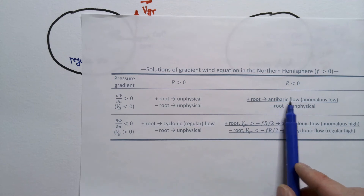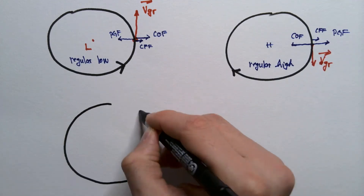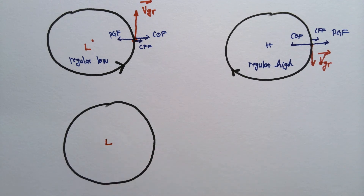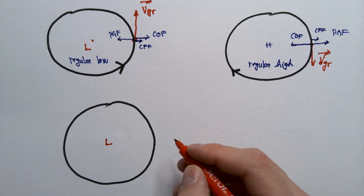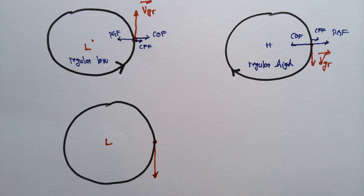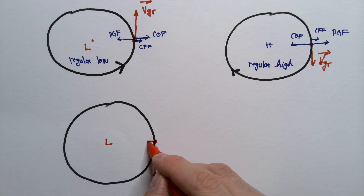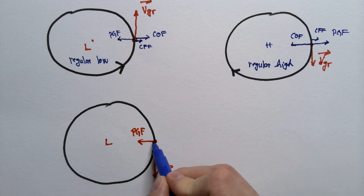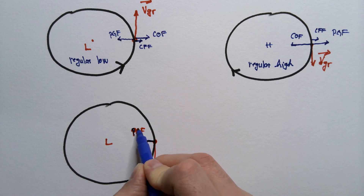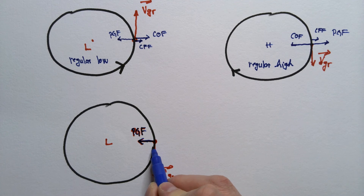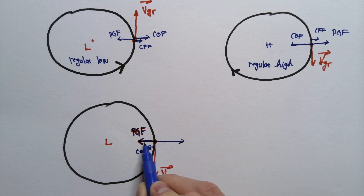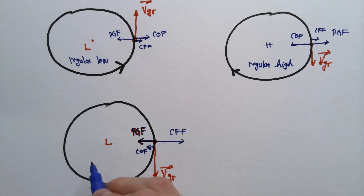Third, the anomalous low: circular motion with low pressure in the center, but gradient winds are in the clockwise direction — that is what makes it anomalous. Pressure gradient force points inward, Coriolis force is to the right of motion (also inward in this geometry), and centrifugal force is the only force that needs to balance these two. This is called the anomalous low.